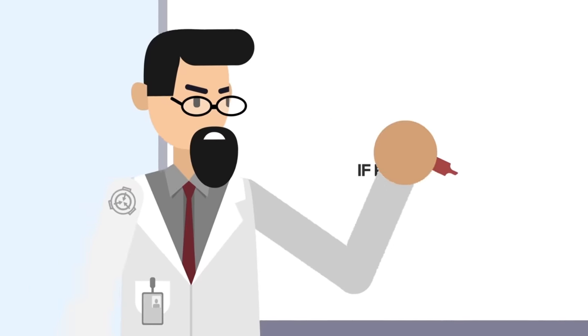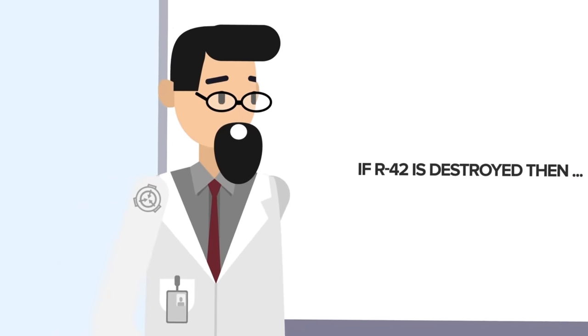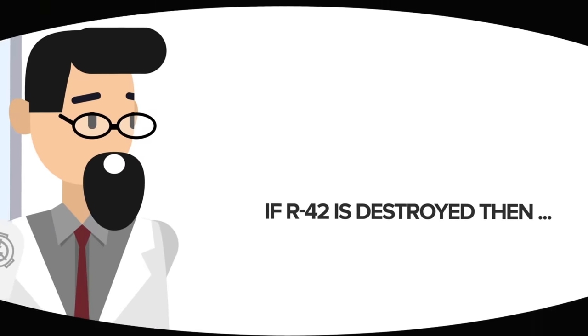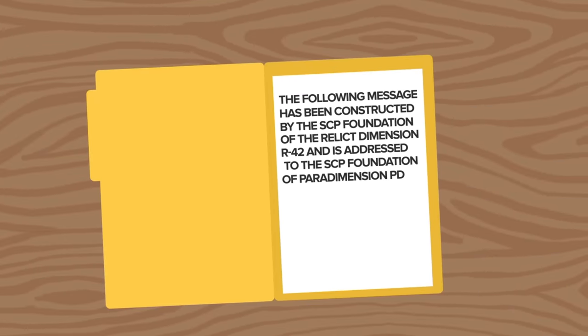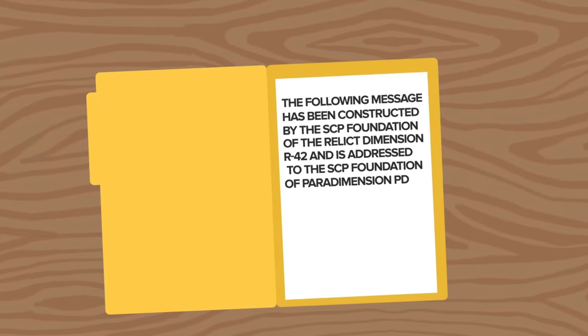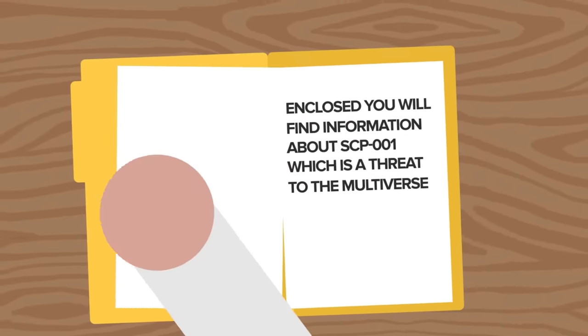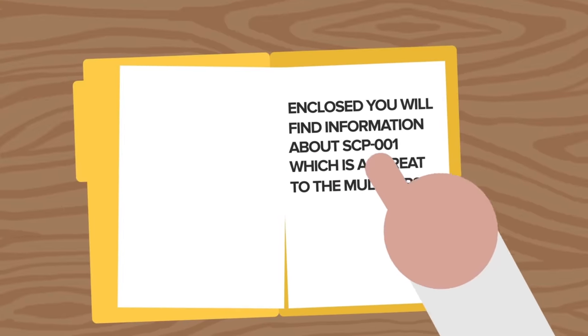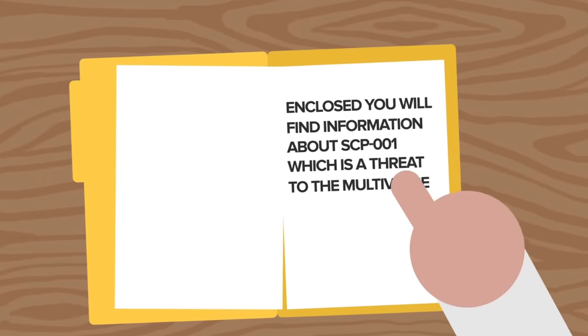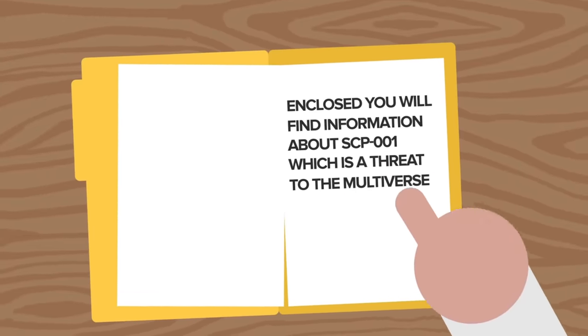It seems as though we're reading this SCP-001 file through the eyes of the SCP Foundation in this so-called paradimension. So, if the original SCP Foundation and their universe, R-42, is now destroyed, what does this mean for us? The note continues, The following message has been constructed by the SCP Foundation of the Relic Dimension R-42, and is addressed to the SCP Foundation of Paradimension PD. Enclosed, you will find information about SCP-001, which is a threat to the multiverse.